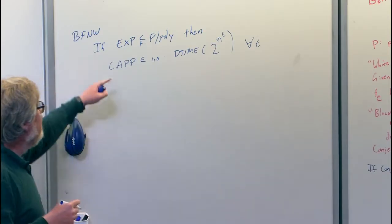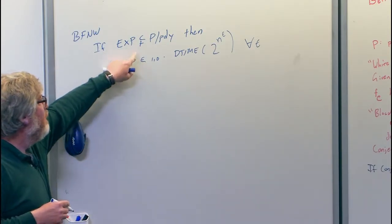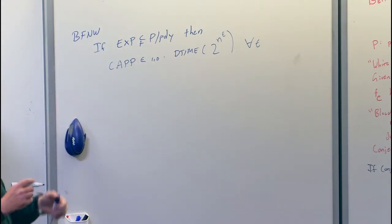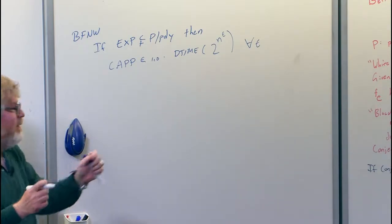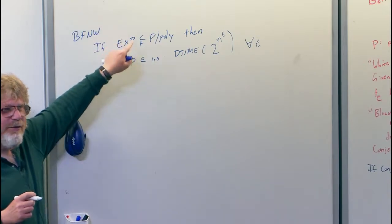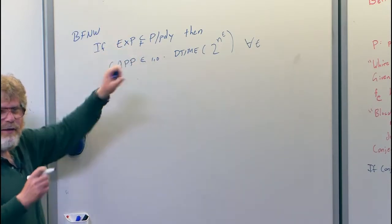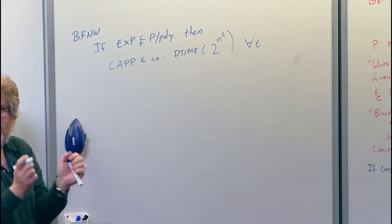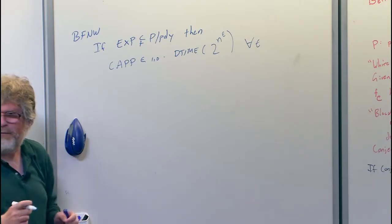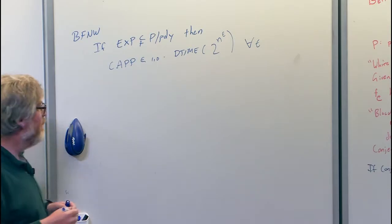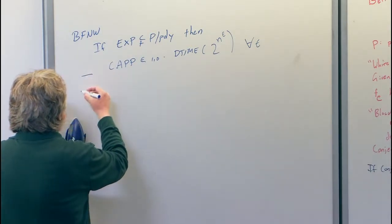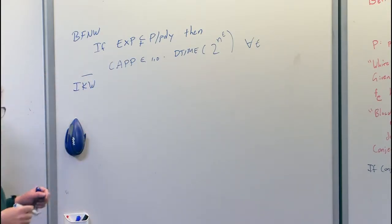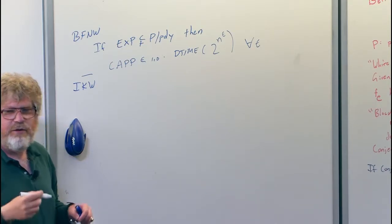What I want to show today is that if we've got a strong enough non-uniform lower bound, we get a derandomization. And we said there's this intuitive connection because this derandomization problem is a kind of meta-problem — its input is a circuit, and that circuit is trying to distinguish its random tape from pseudo-randomness. Today I want to show a version of a result from IKW. IKW gives quantitatively stronger results; I'm going to show the easy version.